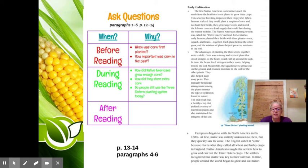Each plant helped the other grow, and the mixture of plants helped preserve nutrients in the soil. The advantages of planting the three crops together were tenfold. Corn was a strong and vertical plant that stood straight, so the beans could curl up around its stalk. In turn, the beans fixed nitrogen in their roots, helping restore the soil. Meanwhile, the squash leaves spread out on the ground and retained moisture in the soil for the other plants. They also helped to keep away pests. This mutually beneficial arrangement among the plants mimics the type of symbiosis found in nature. The end result was a healthy crop that yielded a variety of nutritious plants and also maintained the integrity of the soil.